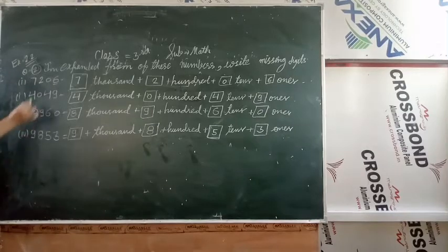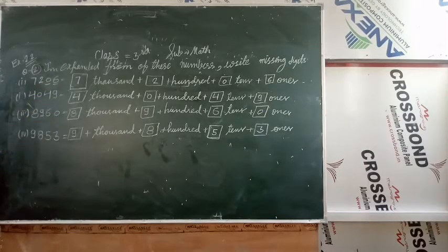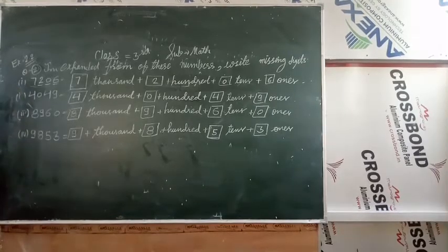Ones ki, the right column is ones, next is tens, hundreds, then thousands. Four digit four columns. Last column is ones, the value is 6.